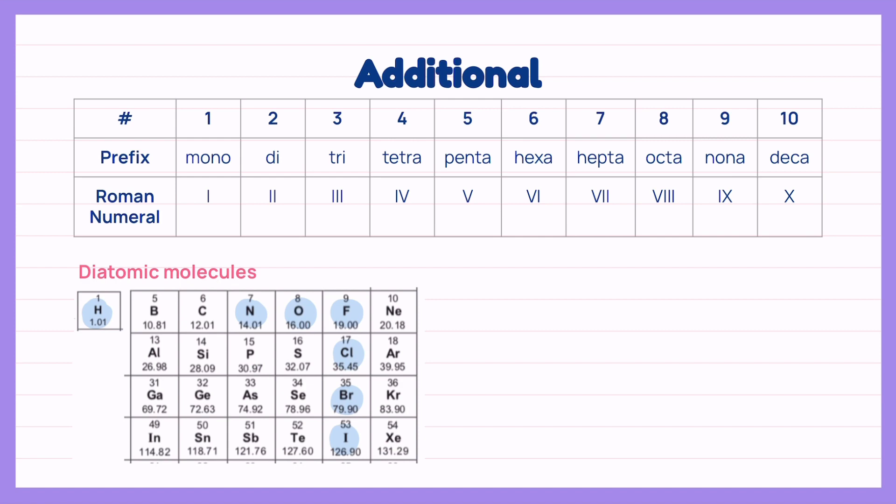Take a look at this slide for additional information. These are the prefix and roman numerals needed to know and below are the diatomic molecules. To give a tip of memorizing these seven elements of diatomic molecules, think of it as number seven with hydrogen.